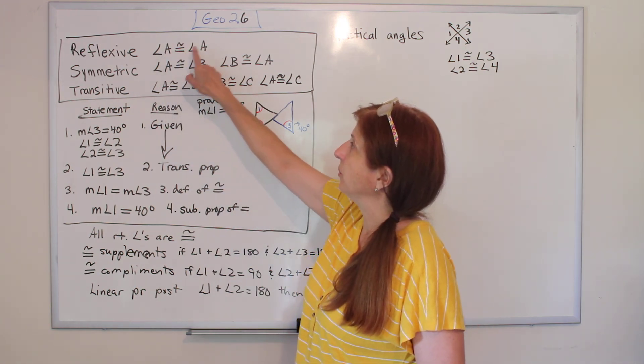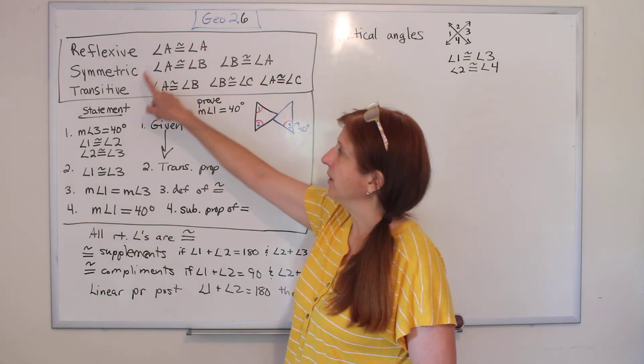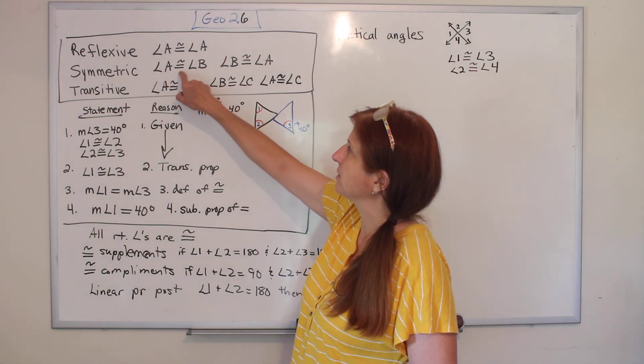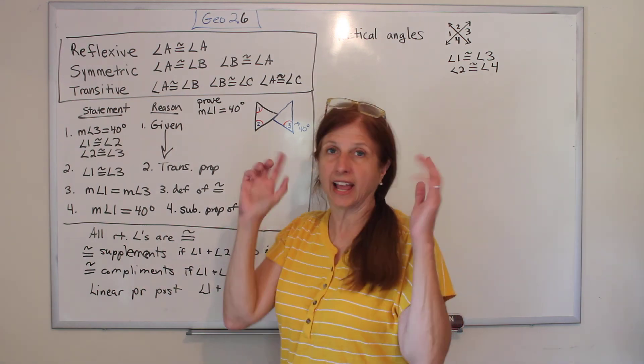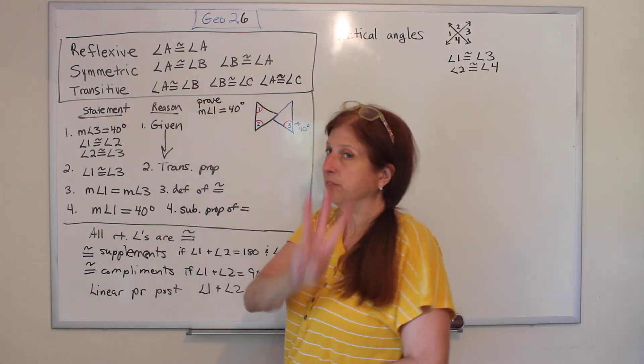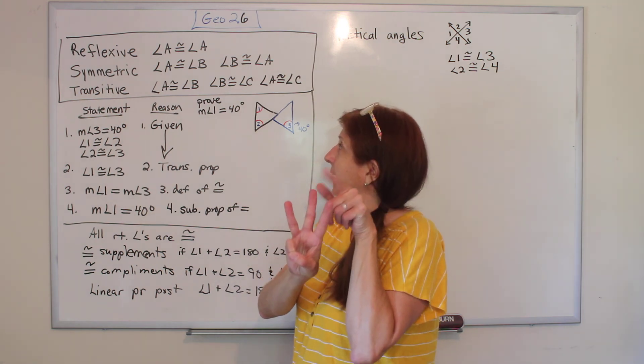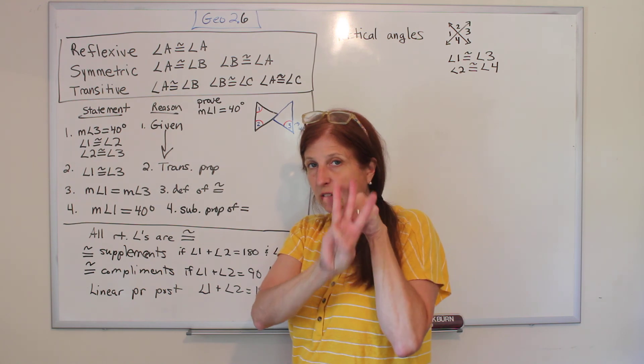Angle A is congruent to angle A, reflexive. Symmetric, if you have angle A is congruent to angle B, then angle B is also congruent to angle A. Okay, and then transitive, if angle A is congruent to angle B and angle B is congruent to angle C, then angle A is congruent to angle C.